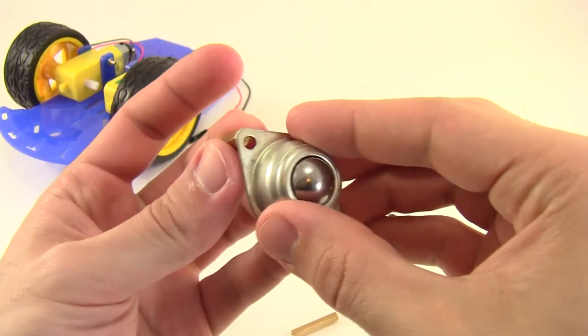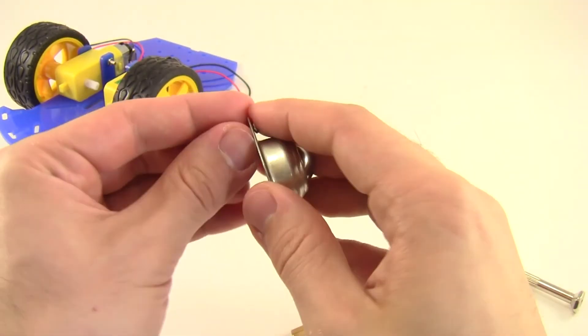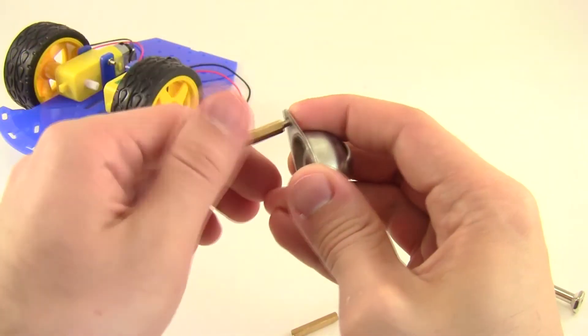So first attach both standoffs to the omni wheel, just line them up with the holes in the wheel, and then use a small screw to attach, just thread the standoff right onto the screw, then repeat that for the second one.